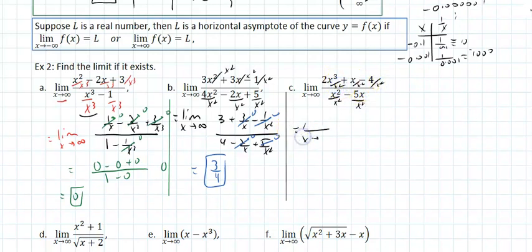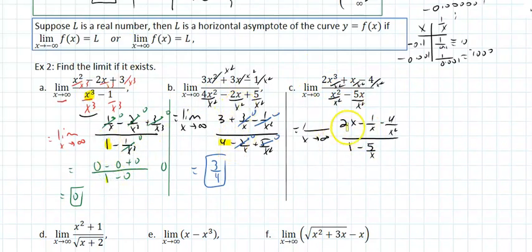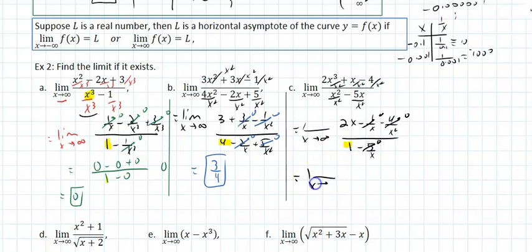That would be the limit as x approaches infinity of 2x minus 1 over x minus 4 over x squared, over 1 minus 5 over x. Dividing by the highest power term of the denominator guarantees the denominator does not become infinity, so you avoid an infinity over infinity. As x approaches infinity, any number over x approaches 0, and 2 times infinity is infinity — so this diverges.